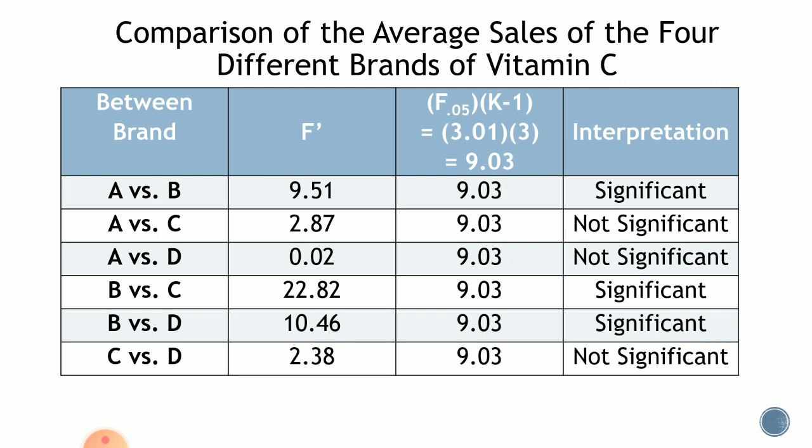A versus B equals 9.51 — greater than 9.03, so significant. A versus C equals 2.87 — lesser, not significant. A versus D equals 0.02 — lesser, not significant. B versus C equals 22.82 — greater, significant. B versus D equals 10.46 — greater, significant. C versus D equals 2.38 — lesser, not significant.